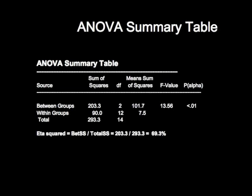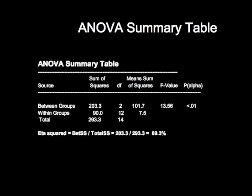That F value is what we use to compare with our expected F value to reach a conclusion about rejecting or not rejecting the null hypothesis that the means are equal across each group. In this particular case, the alpha is less than 0.01, so we would reject the claim that the means are equal. In other words, there are differences between the groups.